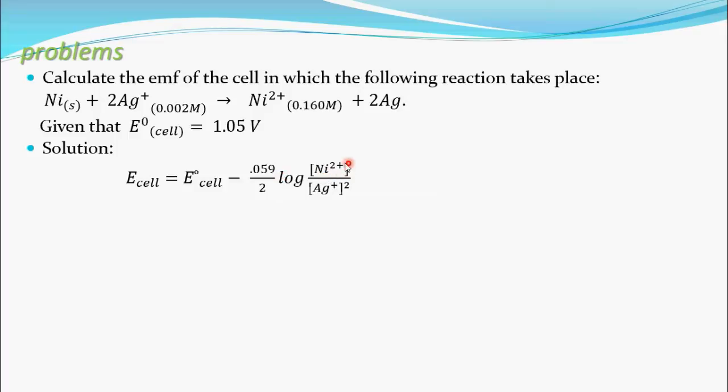Concentration of oxidized form. See here nickel is undergoing oxidation, so you have to take this in the numerator, concentration of this nickel ion. And divided by concentration of Ag⁺, which will be undergoing reduction, to the power 2, because two Ag⁺ ions are involving.